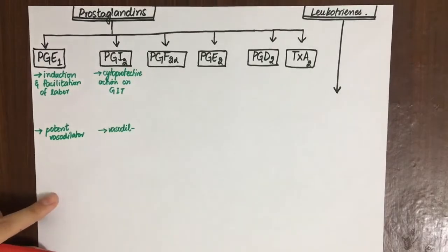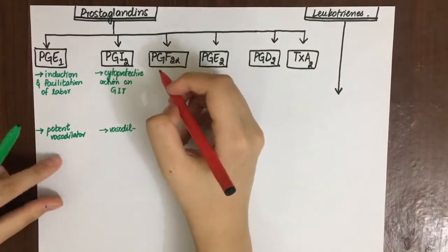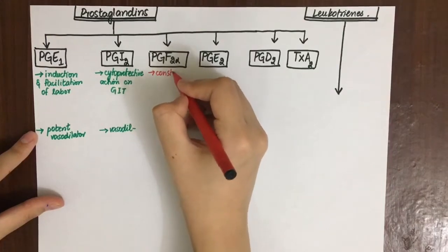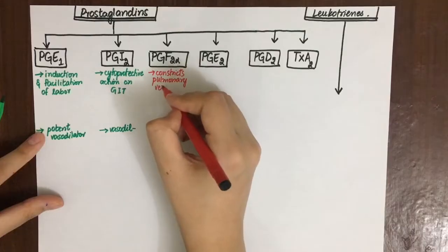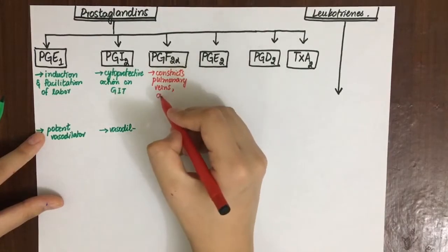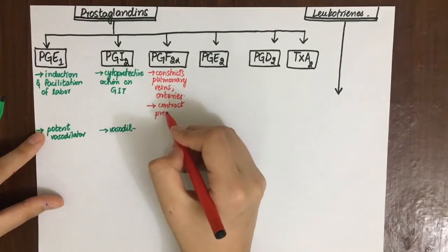PGF2-alpha has a negative action - not actually negative, but in this context it constricts pulmonary veins and arteries. It also contracts pregnant uterus.